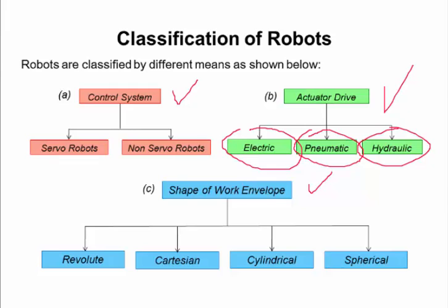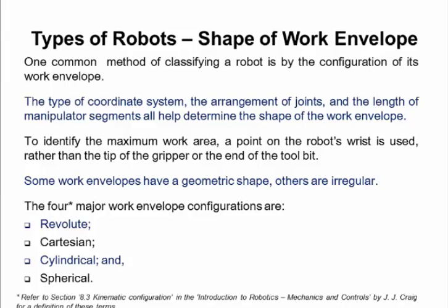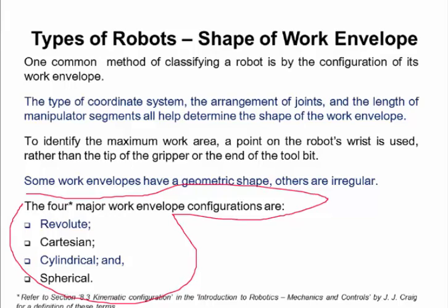Shape of the work envelope. This is how the actual robot moves in its workspace. Revolute, Cartesian, cylindrical or spherical type motions. And we'll go through these shortly. The four work envelopes. There are more, and we'll look at these other envelopes next. But basically, the type of coordinate system, the arrangement of the joints, the length of the manipulator segment, all help determine the shape of the work envelope.